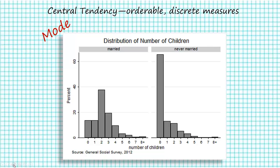I decided to break this example down further. When we take the number of children variable and break it out by people who are married versus people who have never been married, we can see the mode changes quite a bit, and that explains the bimodal nature of the entire distribution. For people who are never married, the mode is 0. For people who are married, the mode is 2. When we put all those people together into the same sample, those become our two different modes. Separating them out gives us more detail when telling a story about children and people in 2012.